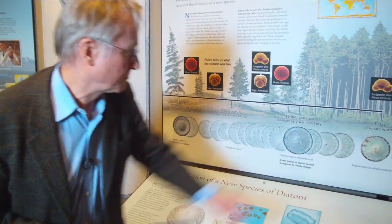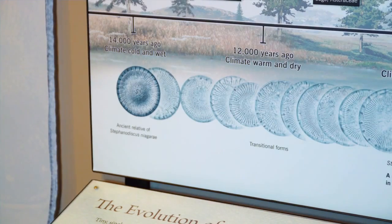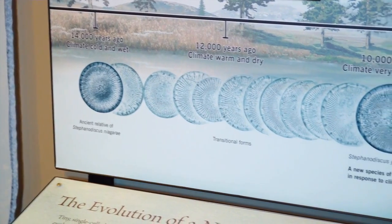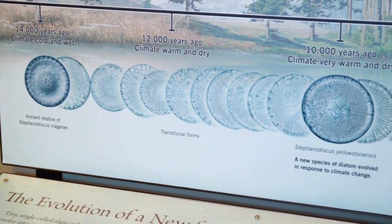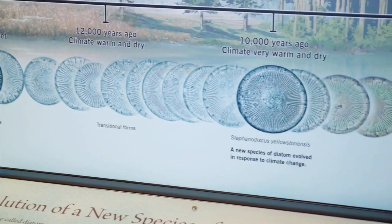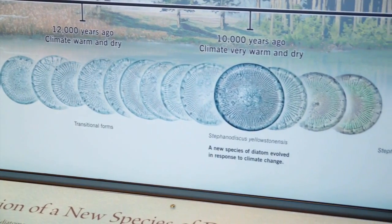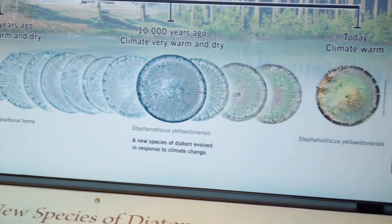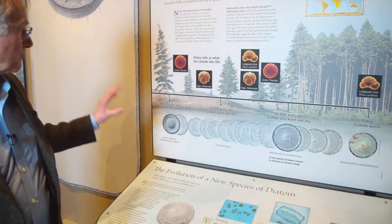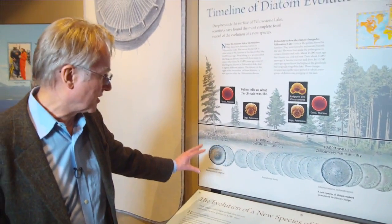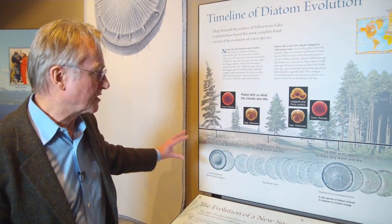It goes on to today, where it is Yellowstoneensis. These are definitely two different species. The differences between them are quite subtle — you have to find out by counting ribs and spines. If you do that, as you go along this timeline, you see the change gradually occurring. This is a perfect example of intermediates in the fossil record showing the complete history of the evolution of a new species.